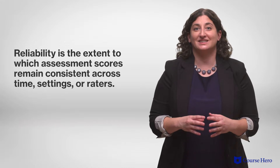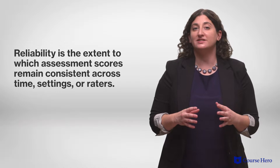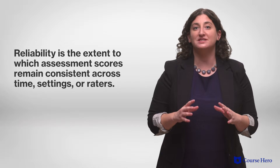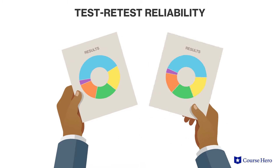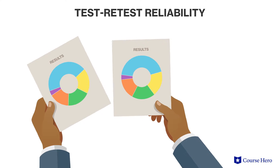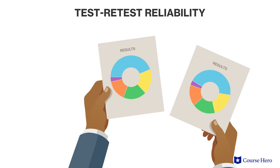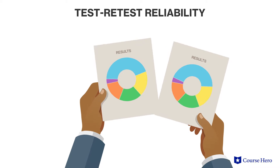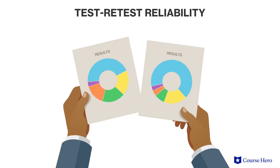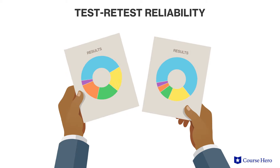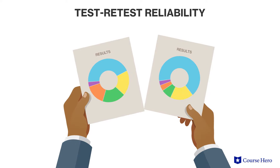Reliability is the extent to which assessment scores remain constant across time, settings, or raters. For example, we generally think of personality as being a stable characteristic, so we would expect the results on a test that measures personality to be the same, whether someone takes the test in January or June. If someone takes the same test months apart and gets a different result each time, that test lacks test-retest reliability.